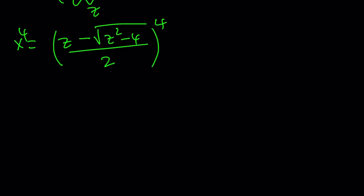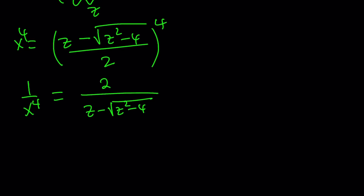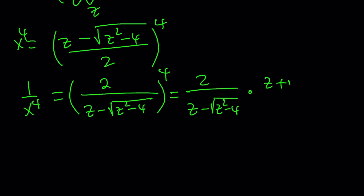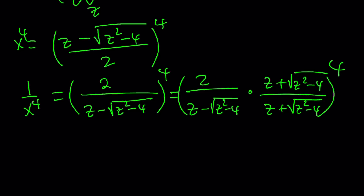Now let's go ahead and find 1 over x to the fourth power. It's just a reciprocal, so you can just flip it. So we can write it as 2 over z minus the square root of z squared minus 4, and then that to the fourth power. But here we can do something: multiply by conjugates. So we write this as 2 over z minus square root of z squared minus 4, multiplied by z plus the square root of z squared minus 4 over the same thing — that's 1. Then we raise it to the fourth power. These two are conjugates and will be multiplied, so let's go ahead and find 1 over x to the fourth from here.